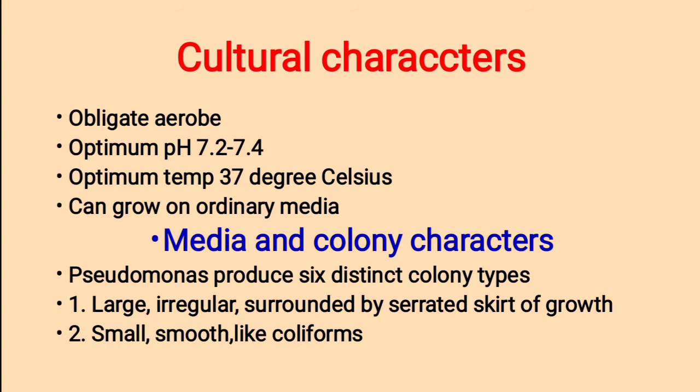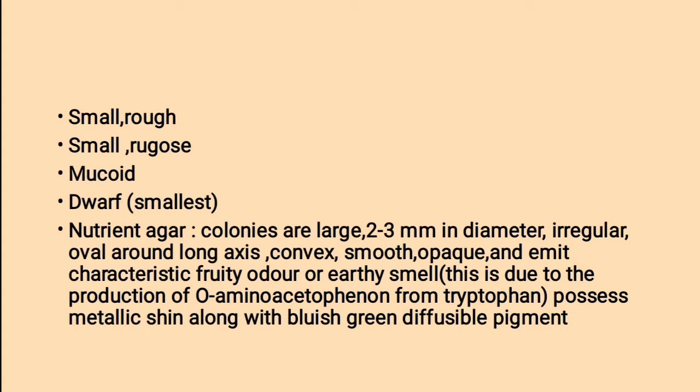Pseudomonas produce 6 distinct colony types. First, large irregular colonies surrounded by a serrated skirt of growth — serrated skirt type colonies means sharp-edged colonies. Second, small smooth coliform-type colonies. Then small rough colonies and small rugose colonies — rugose means ringed colonies.